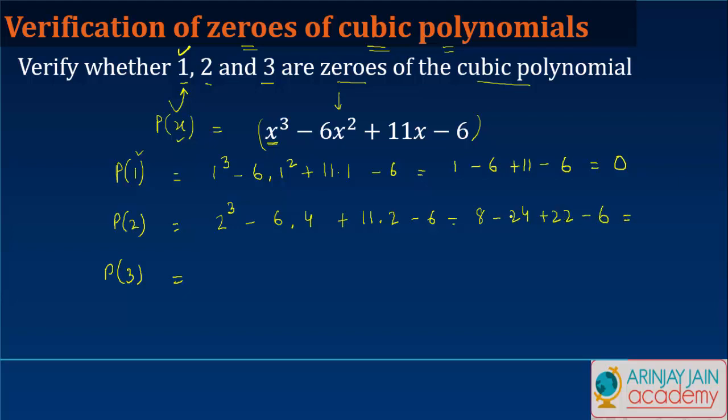22 plus 8 is 30, minus 24 gives 6, minus 6 gives 0. Again, 2 is also a zero of the cubic polynomial.